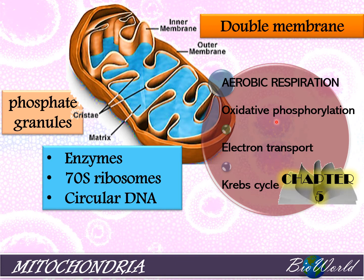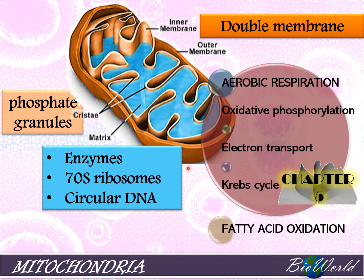The process of oxidative phosphorylation, which involves the electron transport chain, occurs in the cristae, while the Krebs cycle occurs in the matrix. In addition, the mitochondria is also necessary for fatty acid oxidation.